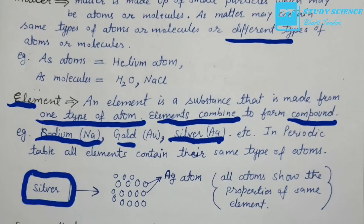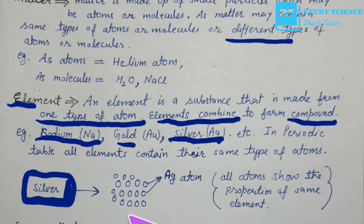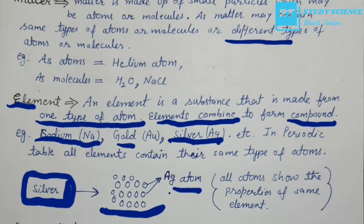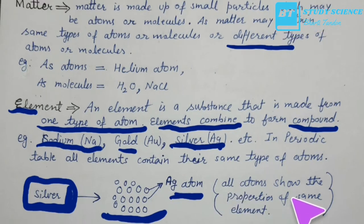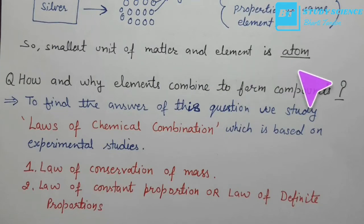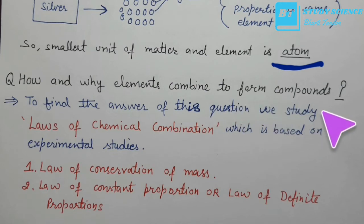If we look at this figure, we have silver. If we break down the silver, we will get the silver atom. So the smallest unit of matter and element is an atom.